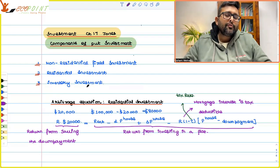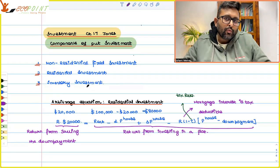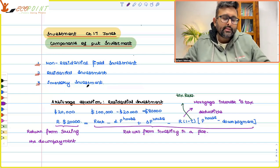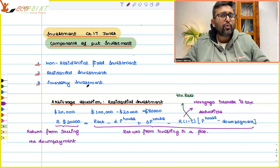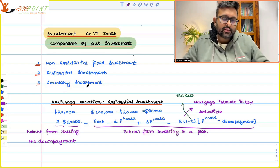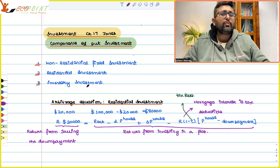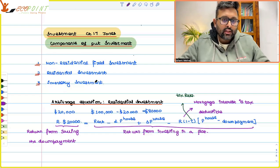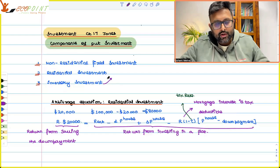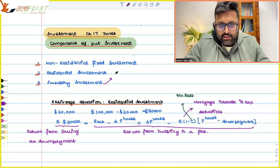Inventory investment is going to occur if you produce more than what you can sell. This might happen because — why do you want to produce more than what you can sell? This happens generally in good times. In good times, demand is already high and you generally produce more than what you can sell. There are several motives given for this.